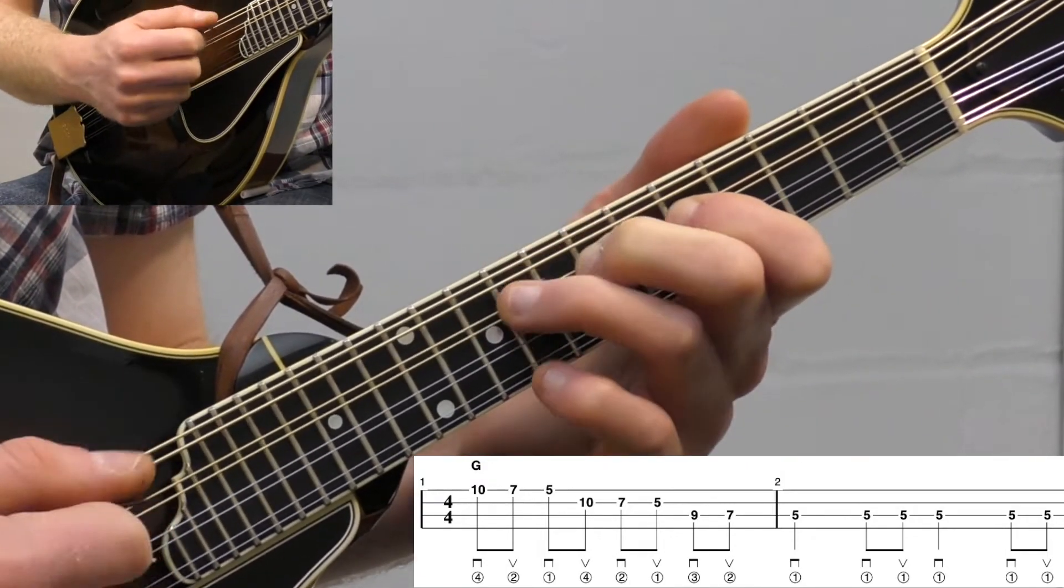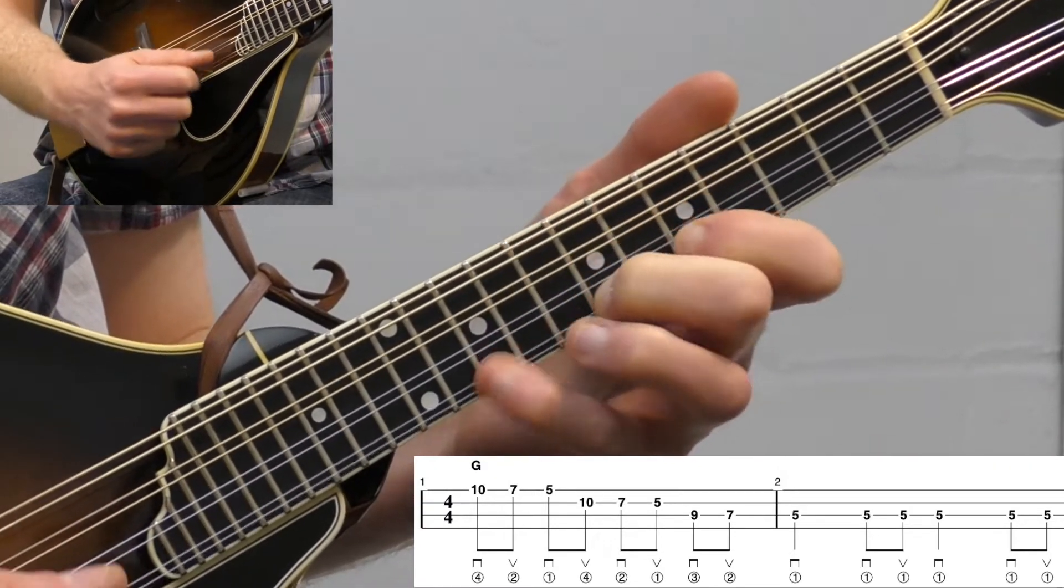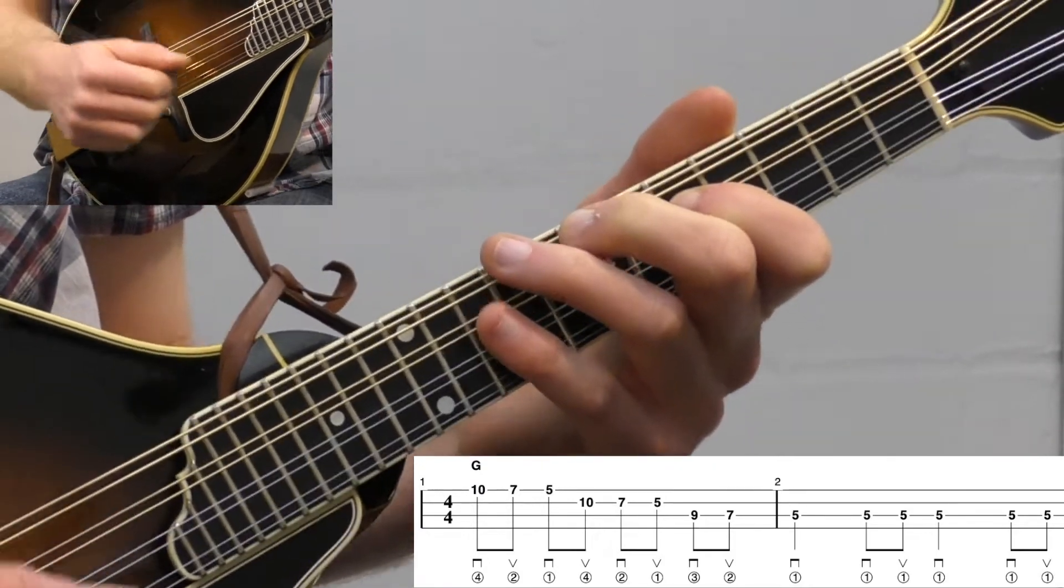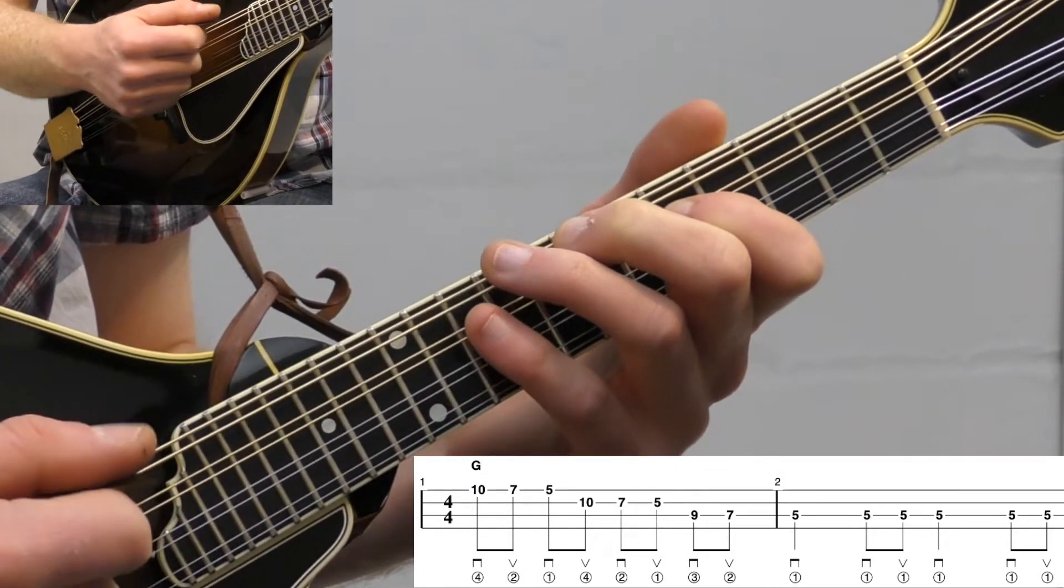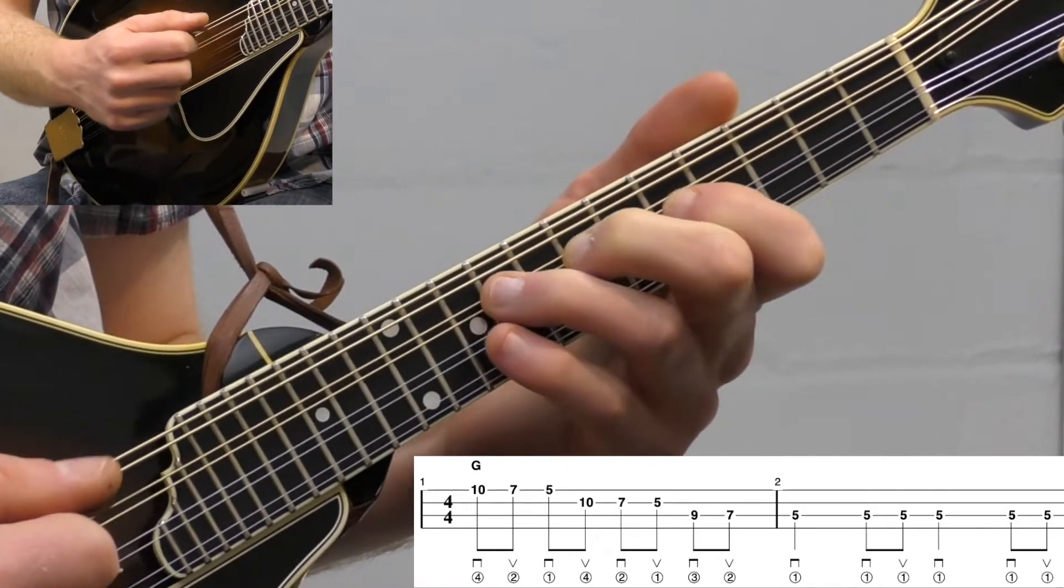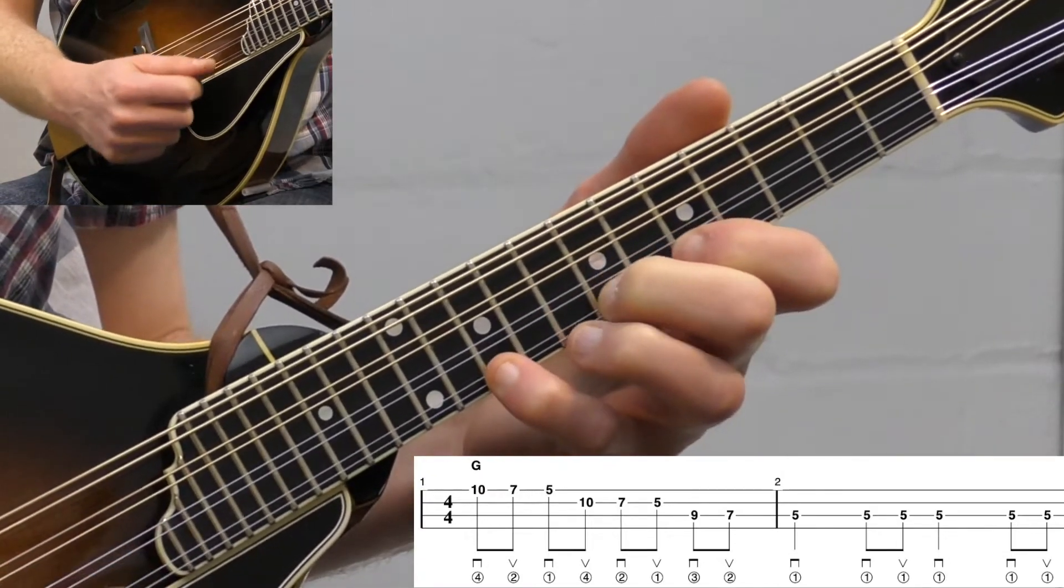Otherwise if you know this shape up here, that bluegrass kind of closed position shape, that's what this works out of. So if I was playing like a bluegrass style solo, now I'm kind of in that shape. This is often referred to as third position in violin. You don't have to remember that, but it's just good practice to shift up higher.